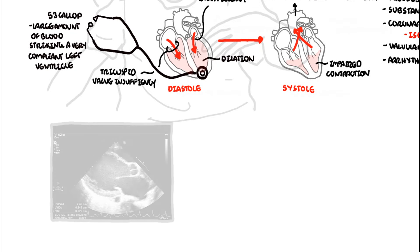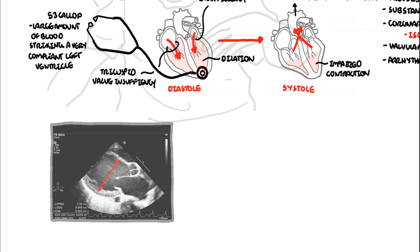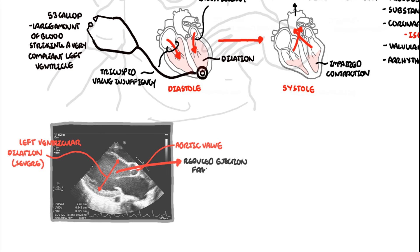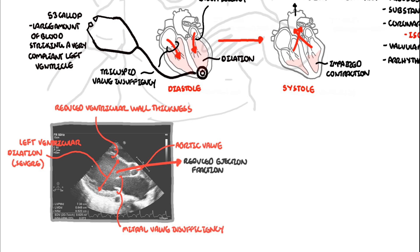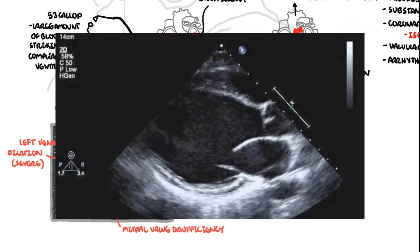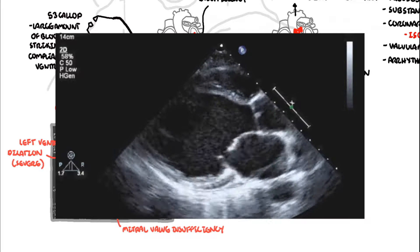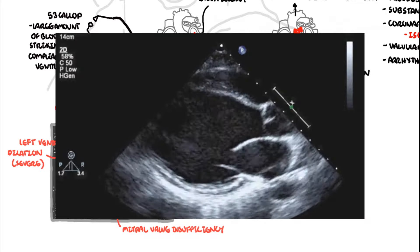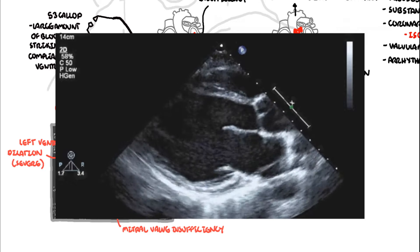On echocardiogram, you can see a dilated ventricle. This echocardiogram shows the left side of the heart, with reduced ejection fraction from the systolic impairment, and possibly normal or reduced ventricular wall thickness. You may see a component of mitral insufficiency. In a real-time echocardiogram of a person with dilated cardiomyopathy, note the dilated left ventricle, thinning of the left ventricular wall, and severely reduced systolic function.